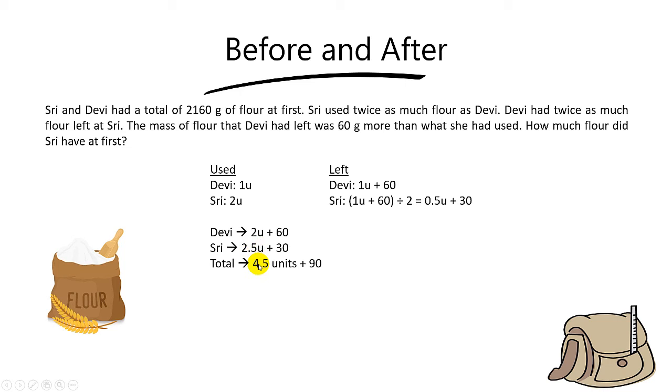Which is 2 plus 2.5 units, which is 4.5 units, and 60 plus 30, you get 90. And so this whole thing will be equal to 2,160. Alright, because that's the amount of flour at first.